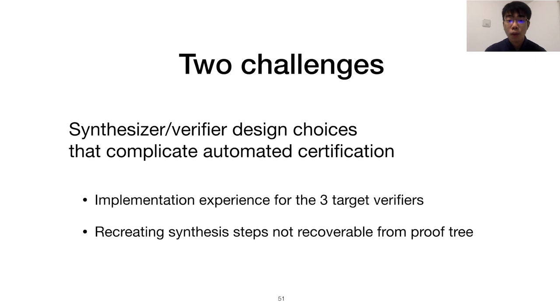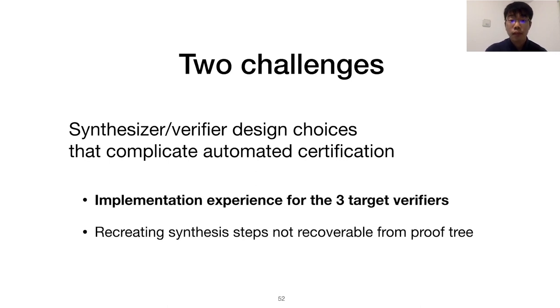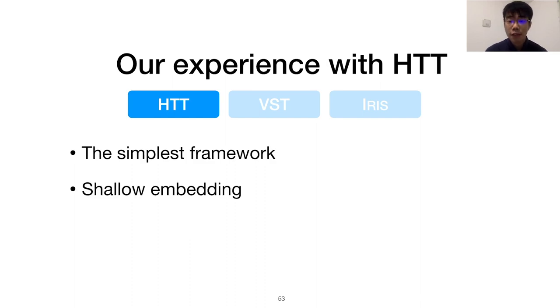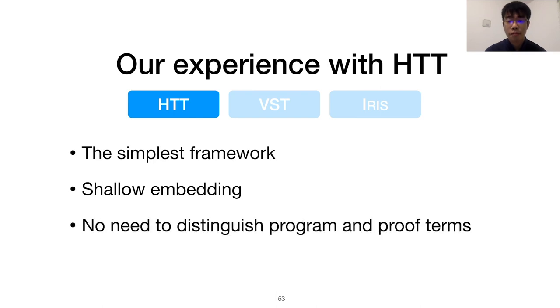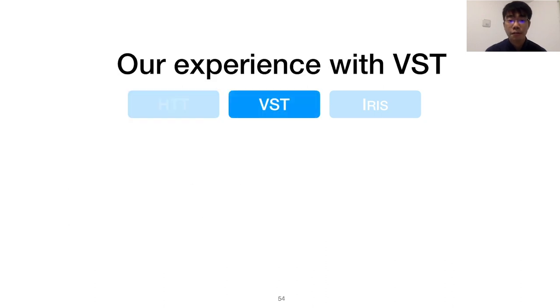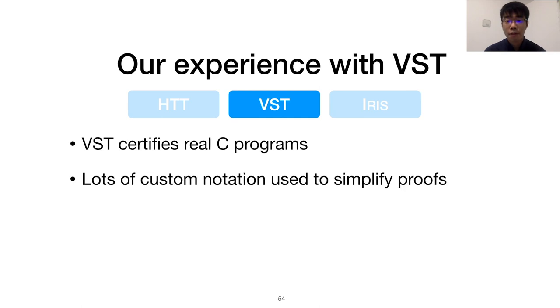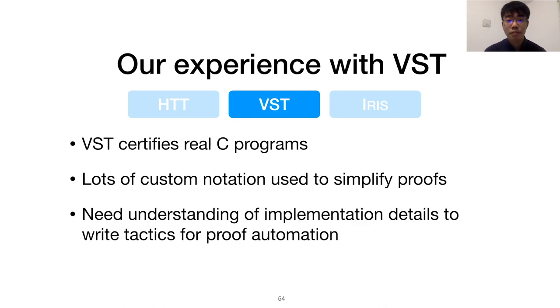For our second question, we found two key challenges. One is the difference in difficulty implementing support for each target verifier. HTT was the simplest. Thanks to its shallow embedding of both SL propositions and object language, there was no need to distinguish program and proof level terms. VST is notable for targeting real, machine-executable C programs. Although VST provides advanced proof automation support, it surprisingly didn't always make things easy for us. Unlike HTT, VST uses a lot of custom notation to simplify the proof context, so in order to design additional proof automation tactics, we had to dig into the implementation details behind the nice notation. Naturally, this made the corresponding automation more fragile.